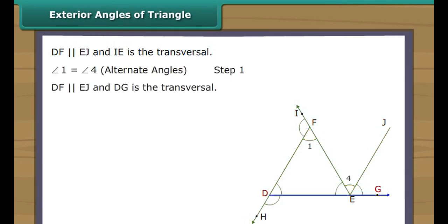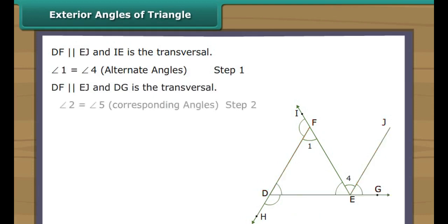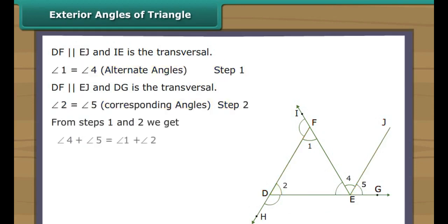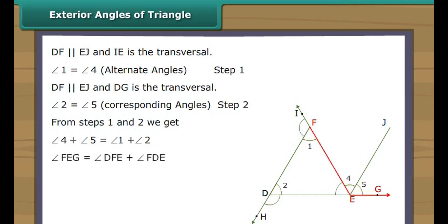If we regard DG as a transversal intersecting the parallel lines DF and EJ, angle 2 is equal to angle 5 — corresponding angles. From the two steps we get, angle 1 plus angle 2 is equal to angle 4 plus angle 5. It means angle FEG is equal to angle DFE plus angle FDE.